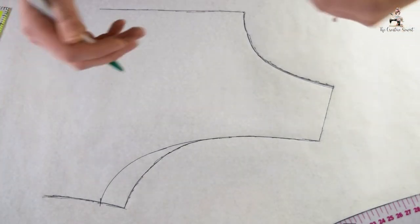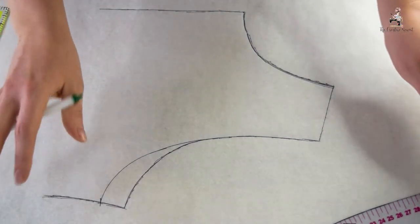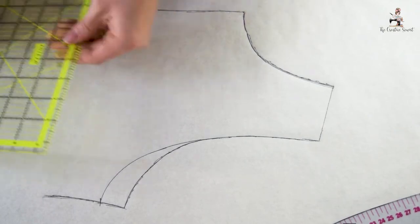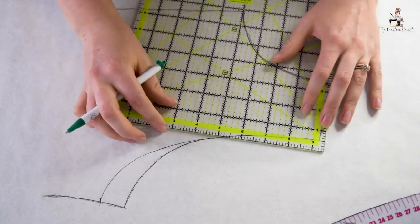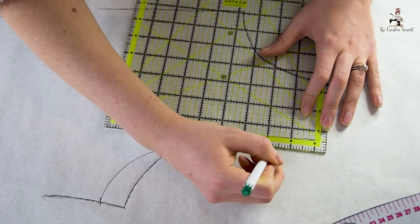Another example would be if I need to add seam allowance. So let's say your pattern came without seam allowance included and some do, then it's pretty simple. You can just go in with your straight edge ruler once again and on these curved areas you can mark in your seam allowance. Let's say I want half an inch.